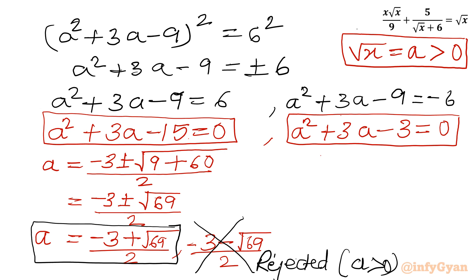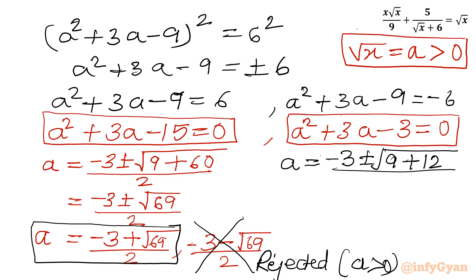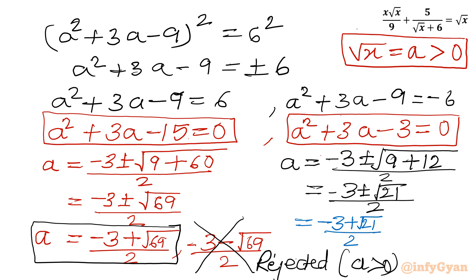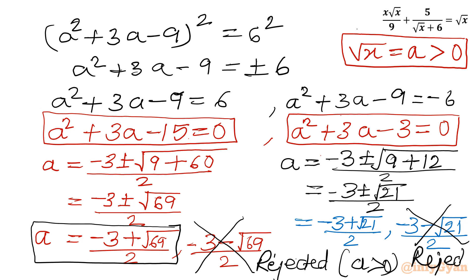Now for the second quadratic, applying the quadratic formula: a equals (minus 3 plus or minus √21) over 2. So I can write two values of a — one will be positive and one will be negative. We reject the negative value, and only the positive value (minus 3 plus √21 over 2) is accepted.